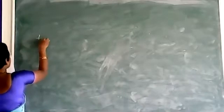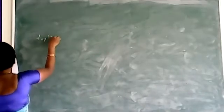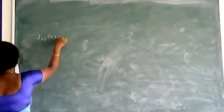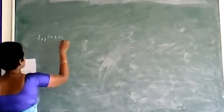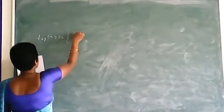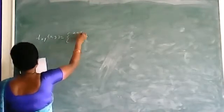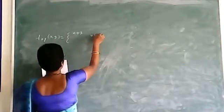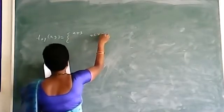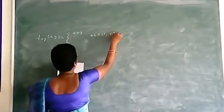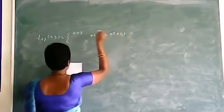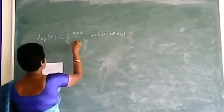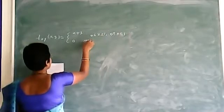So the joint PDF here is f(x,y) given as x plus y for 0 less than or equal to x less than or equal to 1, and 0 less than or equal to y less than or equal to 1, and 0 otherwise.